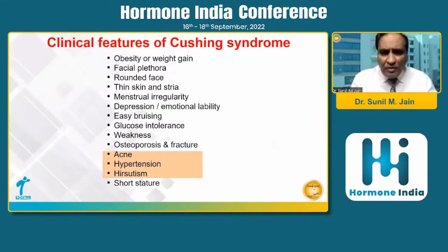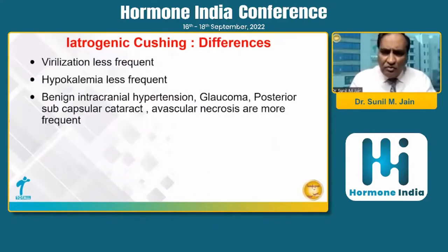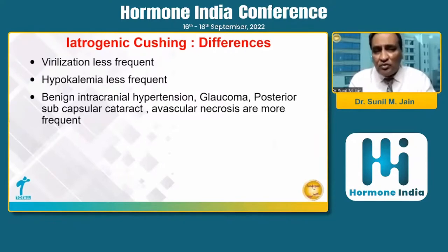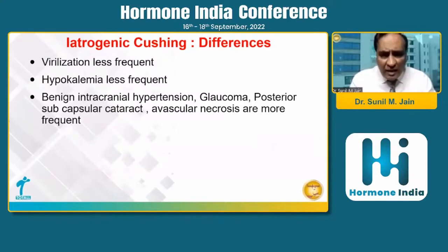Hypokalemia is also less frequent in patients with iatrogenic Cushing's, whereas it is quite common in endogenous Cushing's syndrome because of the mineralocorticoid effect from endogenous cortisol production. The steroids we use for therapeutic purposes — like dexamethasone, betamethasone, and prednisolone — have very little mineralocorticoid effect. The same applies to virilizing effects.